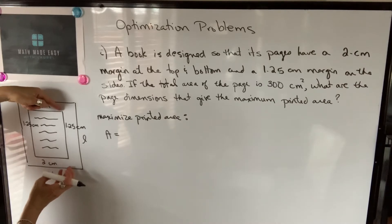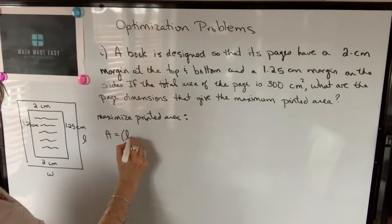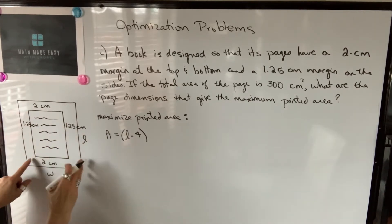I'm going to write the length of the printed part in terms of that L, but it will be L minus 2 minus 2, so that will be L minus 4. So the thing I'm maximizing is this area, not this whole area.